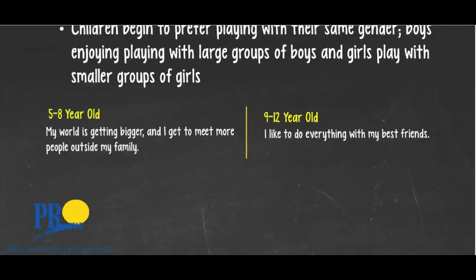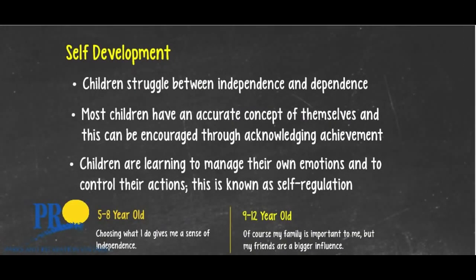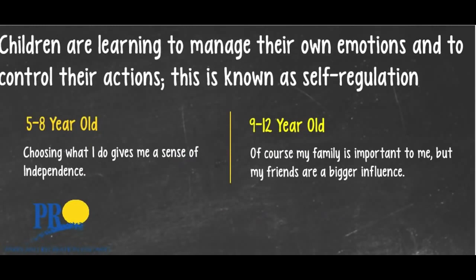Moving on to self-development. Children struggle between independence and dependence. Most children have an accurate concept of themselves, and this can be encouraged through acknowledging achievement. Children are learning to manage their own emotions and control their actions — this is known as self-regulation. Think about the praise you give and make sure it's genuine versus empty, like saying 'oh good job' as you look the other way. To promote self-regulation, provide choices and encouragement, and talk about the effects of behavior on others — for example, 'If you put your shoes on, then we can all go play soccer outside. Your friends are waiting for you — they know you're an all-star goalie.'